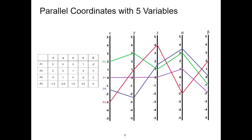For example, the green edge represents point 2: it starts at 2 on the x-axis, goes to 3 on the y-axis, then 1 on the z-axis, 3 on the alpha-axis, and ends at minus 1 on the beta-axis.